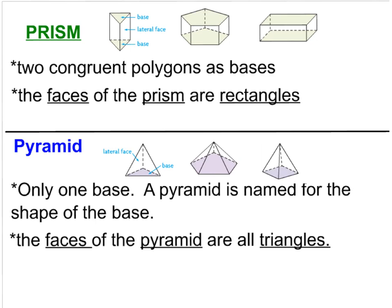This one has two congruent polygon bases — they're pentagons — and all the faces are rectangles, so this would be a pentagonal prism. And this last one shows two congruent polygon bases that are rectangles, and all the faces are also rectangles, so we would call this a rectangular prism.